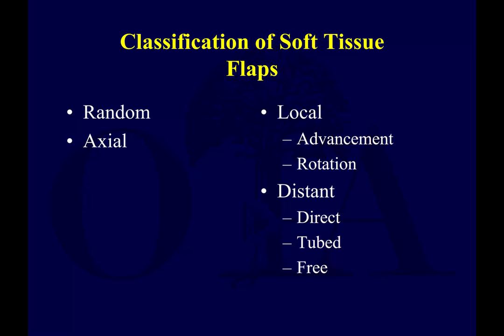Axial flaps are a single pedicled flap that has an anatomically recognized arteriovenous system running along its long axis. An axial flap is basically not restricted to that same one-to-one ratio of flap elevation given with a random flap. Flaps can also be classified as either local or distant based on the proximity of the donor site to the recipient site. A local flap can be further categorized by the nature of their pedicle into an advancement or rotation flap.